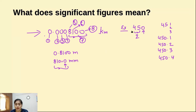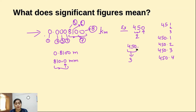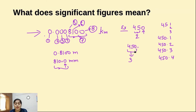But if you write the same value as 450. (with a decimal point), now there are 3 significant digits. Because now it is fixed — we are measuring the value up to that much precision. Without the decimal point, the zero may be a round off and we cannot say for certain. But if the decimal is there, then 450 is the exact number measurable through a particular measuring device, and your measurement is that much precise.